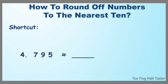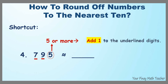Number 4: 795. The tens digit is 9. We also underline the digit to its left. Encircle 5. If the encircled digit is 5 or more, add 1 to the underlined digits. So 79 will be added with 1 — it becomes 80, and we make 5 zero. So the answer is 800.